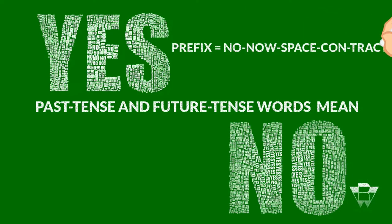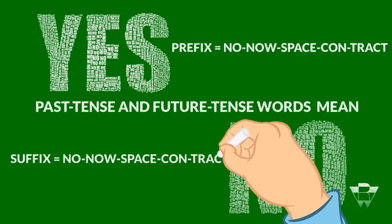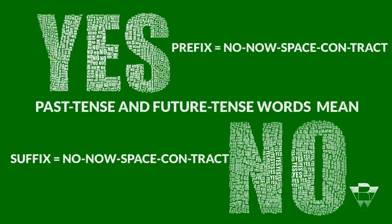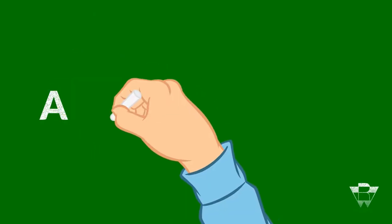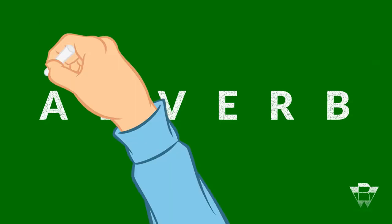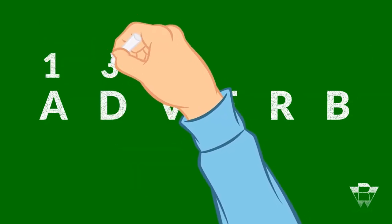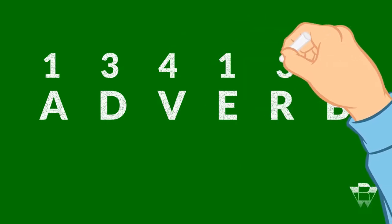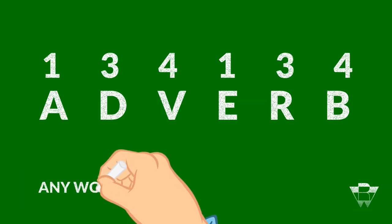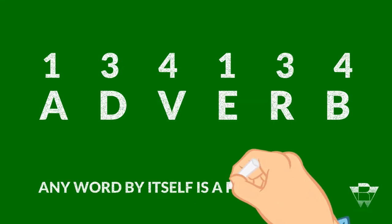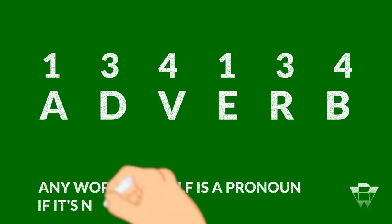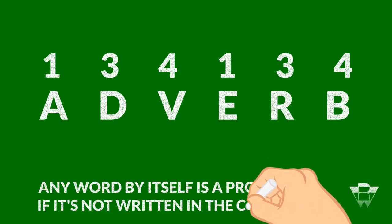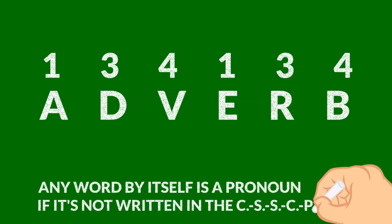A deeper closure and clarity I'll share with you now is that if you were to syntax a word one letter at a time — for example, if you wrote the word 'adverb' and you wrote A space D space V space E space R space B, putting spaces in between the letters — now each letter is going to be syntaxed separately, not as a whole.